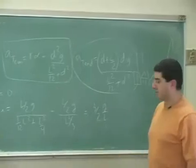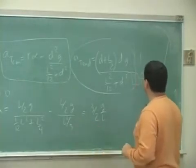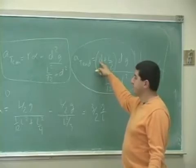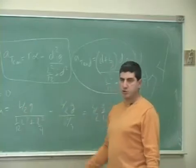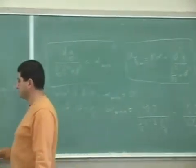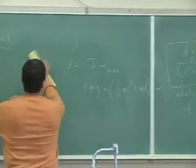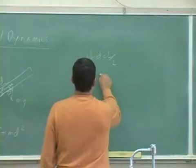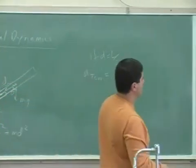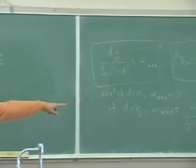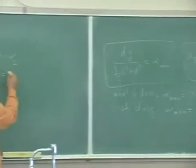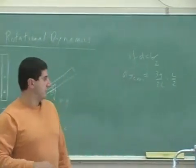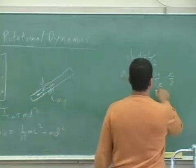The key point: always calculate alpha first, then calculate the tangential acceleration at any point by multiplying alpha by the distance from that point to the pivot. For the limiting case D equals L over 2, the A tangential of the center of mass is alpha max times L over 2, which is 3G over 2L times L over 2. These cancel to give three-fourths G.